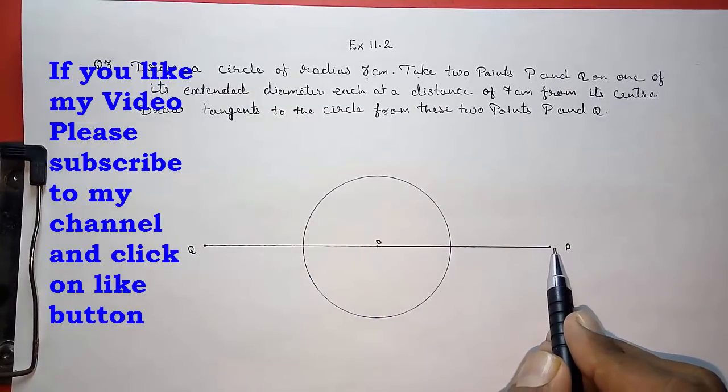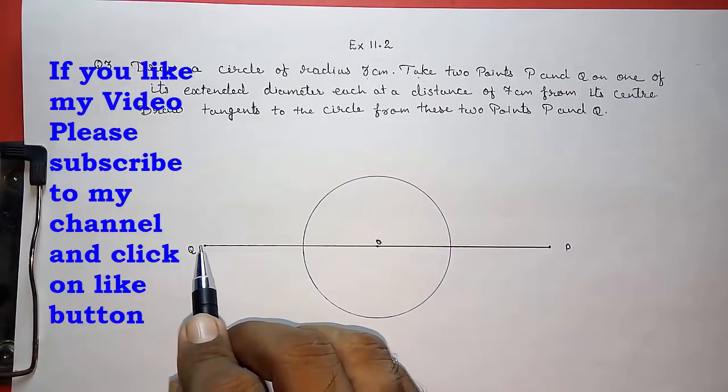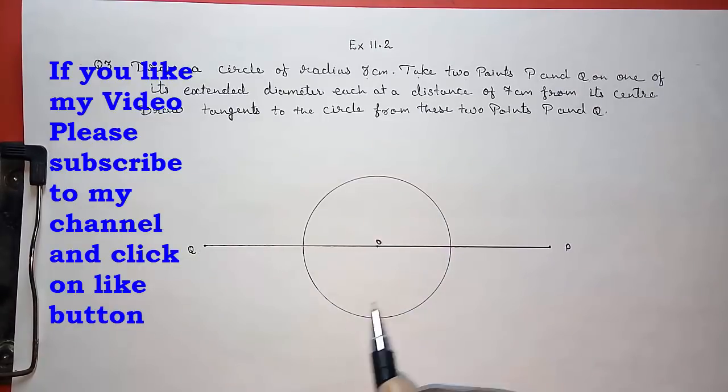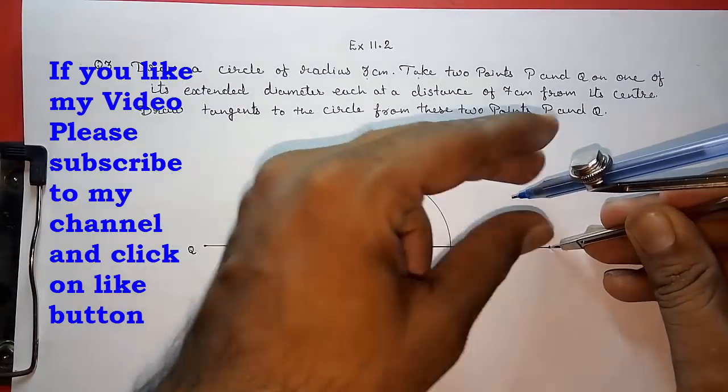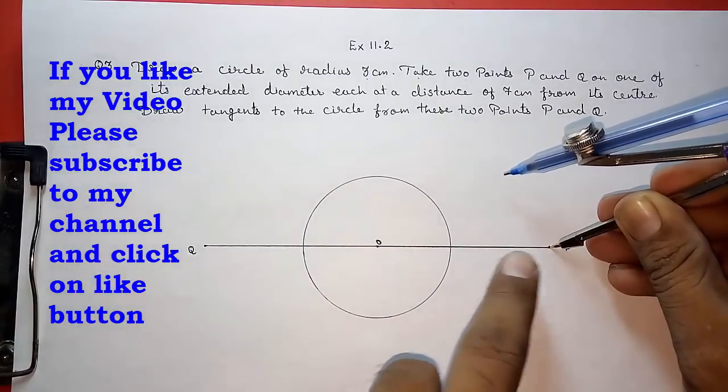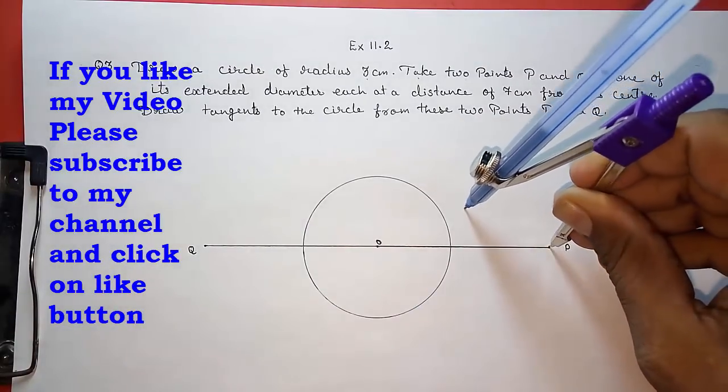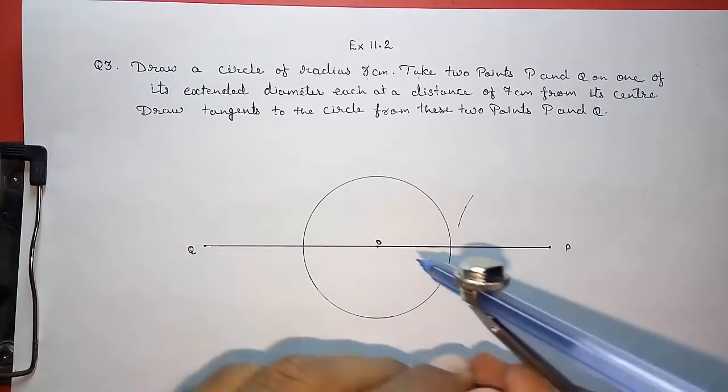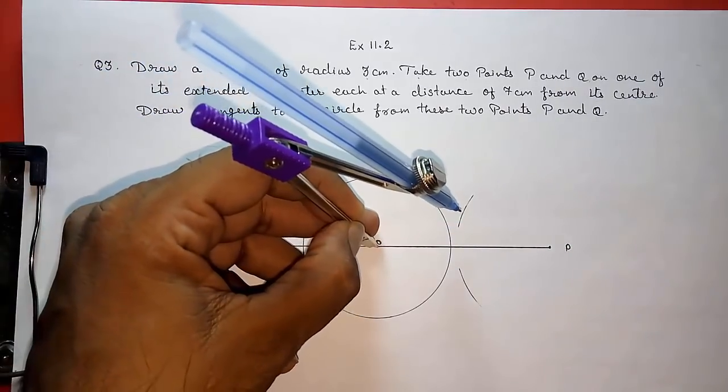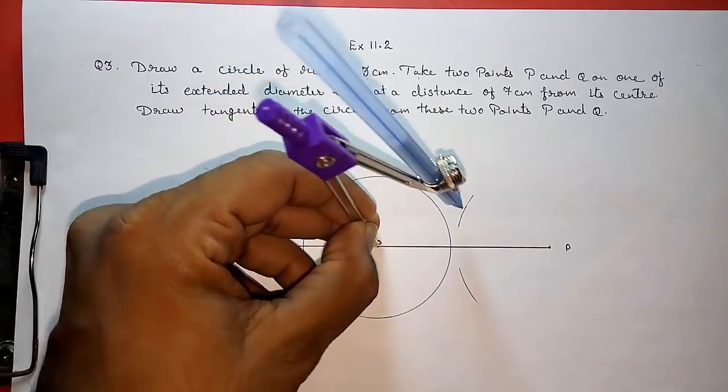So this is O and give this point name P and this Q. Now we have to draw tangent from P to this circle and from Q to also this circle. You know we will get two tangents from each. We have to do the same thing that we had done in previous questions. We have to find the midpoint of O and P by drawing perpendicular bisector here. As I am drawing it. Look here.